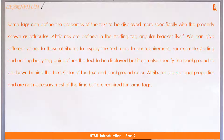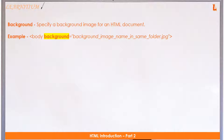For example, the opening and closing body tag pair defines the text to be displayed, but it can also specify the background to be shown behind the text, the color of the text, and the background color. The syntax of the body tag can be: body background equals background.jpg. Attributes are optional properties and are not necessary most of the time, but are required for some tags.